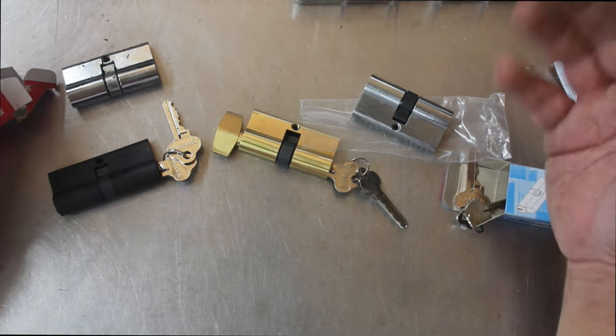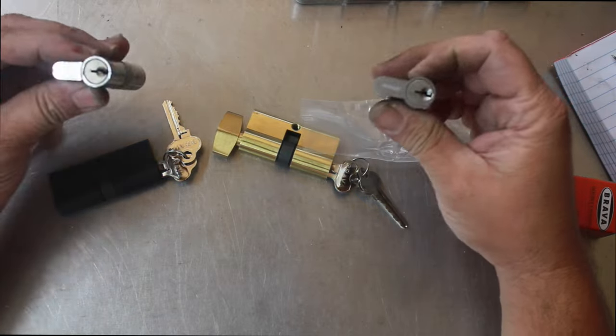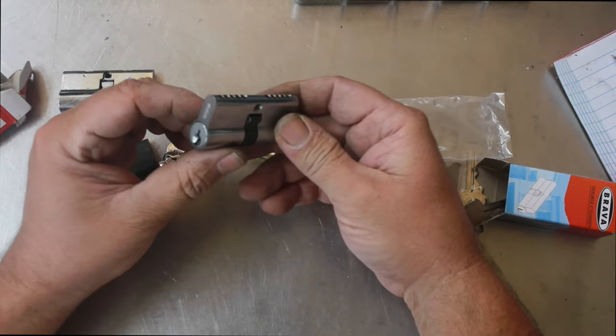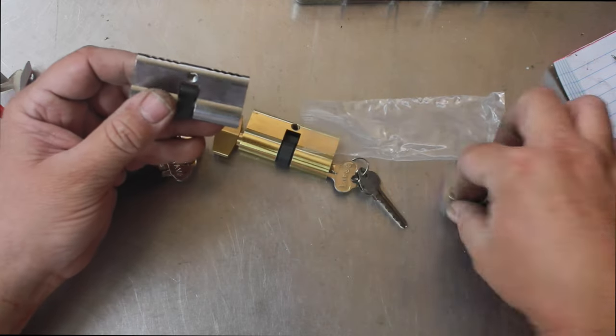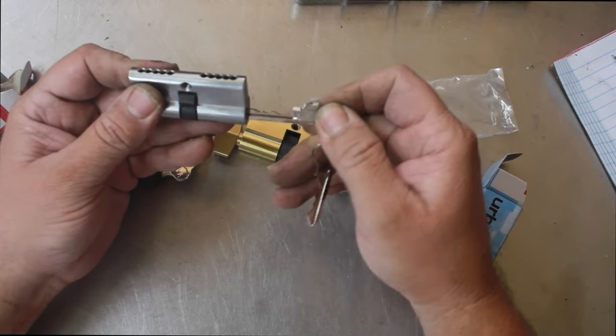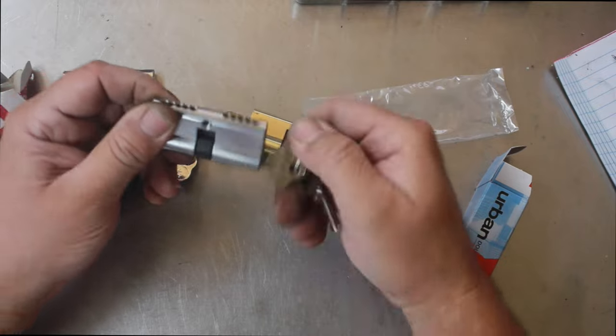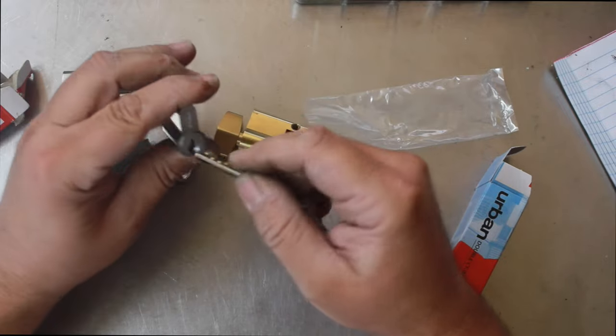Then you have mortise locks which use the same type of shape cylinder but the cylinders are different. Here we have the one for a mortise lock and as you can see this is fixed. This is not moving. When the key moves, it moves that cam. You can go all the way around and it can happen on both sides.